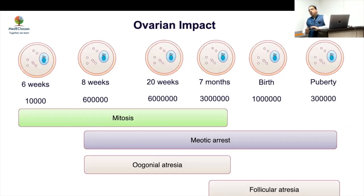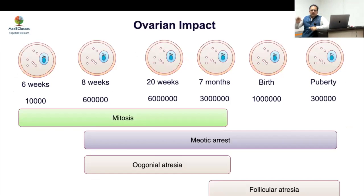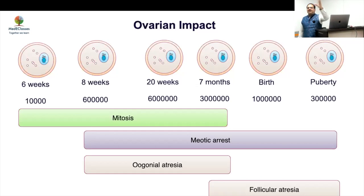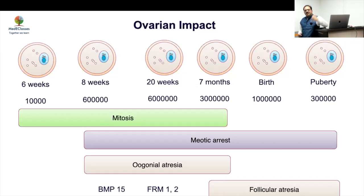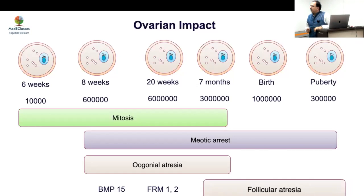Regarding the ovaries — Turner syndrome is not an ovarian dysgenesis. The ovaries are perfectly normal in their formation and behave like normal ovaries. What happens is that follicular atresia is accelerated. In normal girls, 90% of ovarian follicles are lost by birth, with rapid decline thereafter. In Turner syndrome, this process is accelerated — there is a rapid decline in ovarian function, but it is not a true dysgenesis.